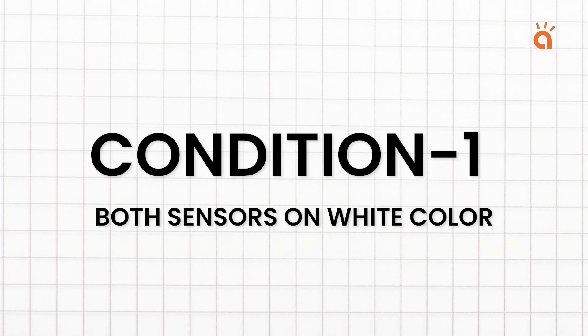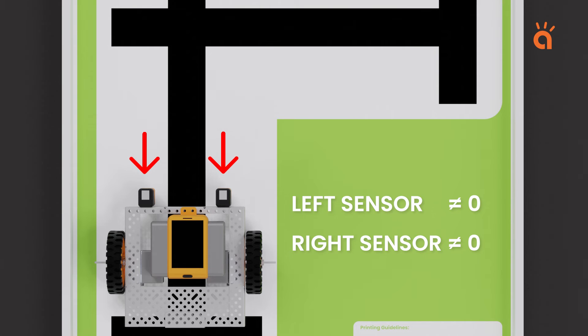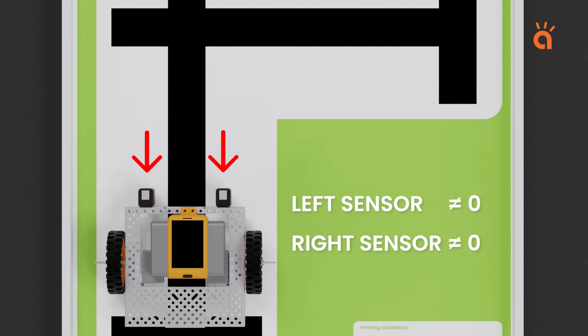After checking the sensors, it's time to write down the conditional statements for our line follower robot. There are four simple conditions. Both sensors on white color. In this condition, the robot is facing straight and both the sensors are on white color. So both the sensors will return a value of 1023 which is not equal to 0. When the robot is in this condition, we will program the robot to move in forward direction. Here is the code.